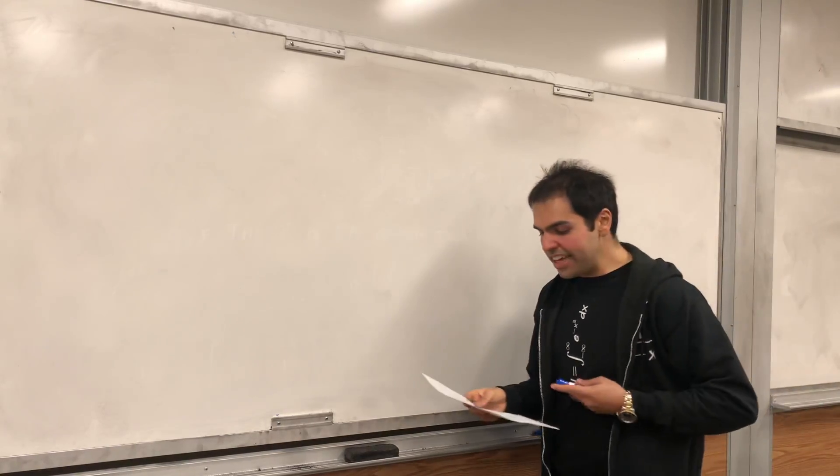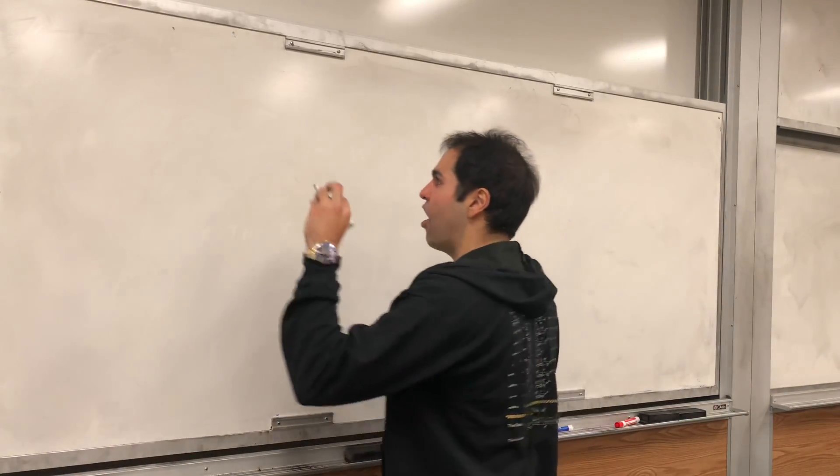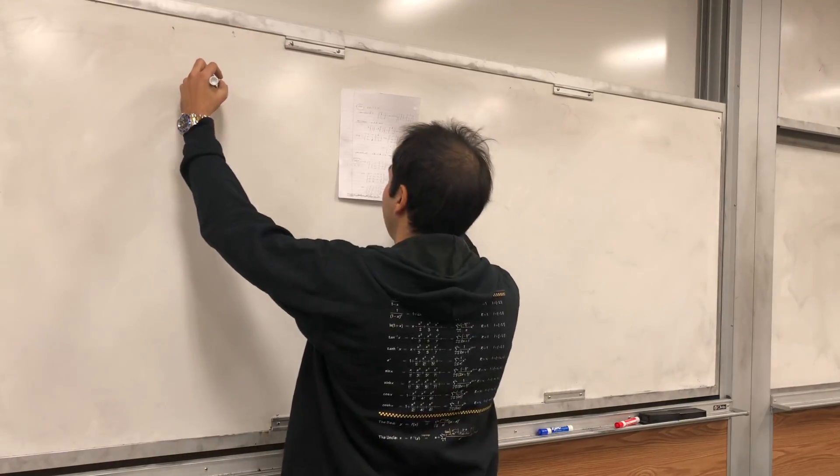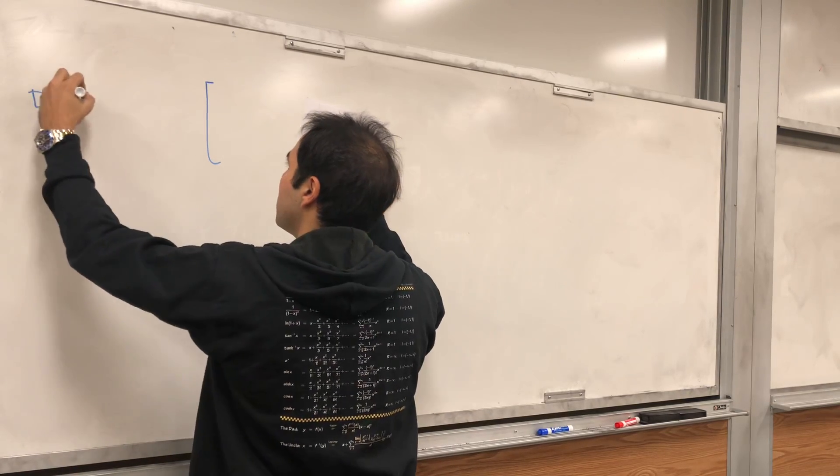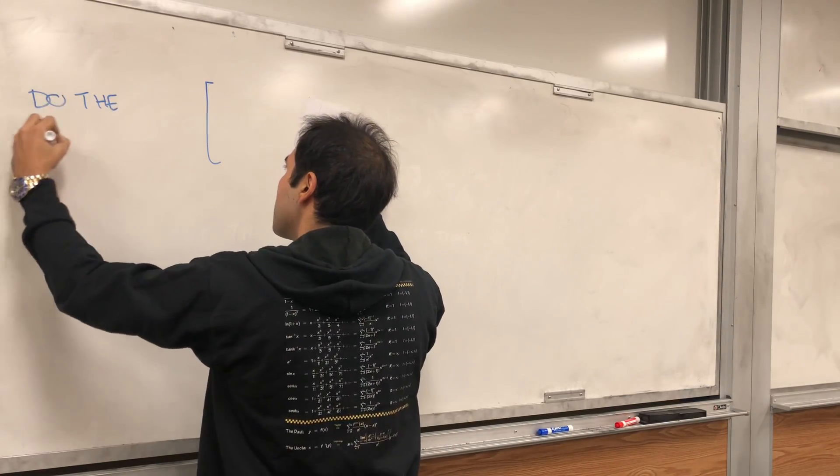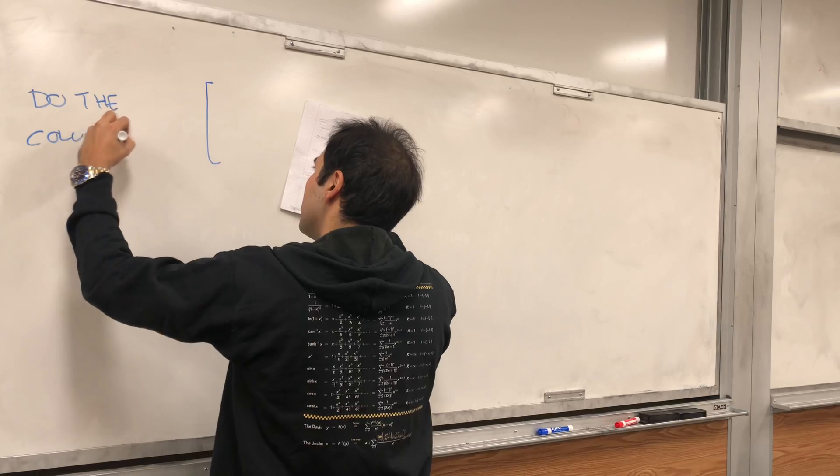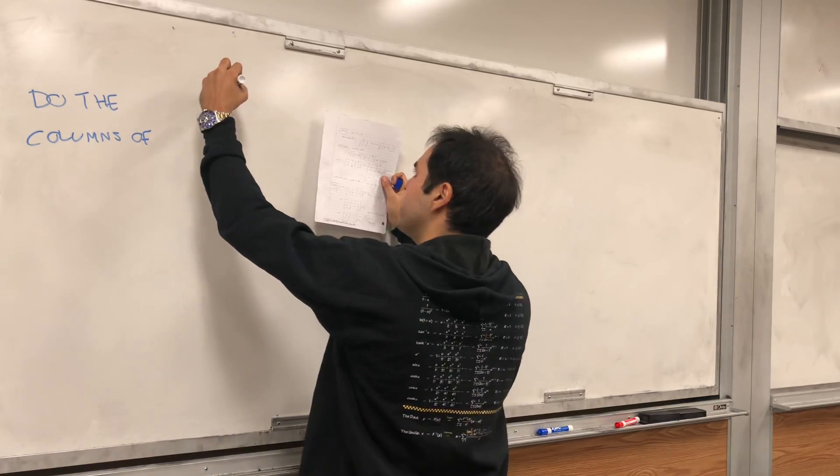When is any vector in the span? In other words, in this case, when is the span of columns equal to the whole space? So, the question is, do the columns of the matrix...